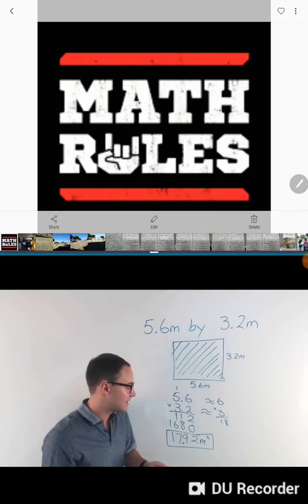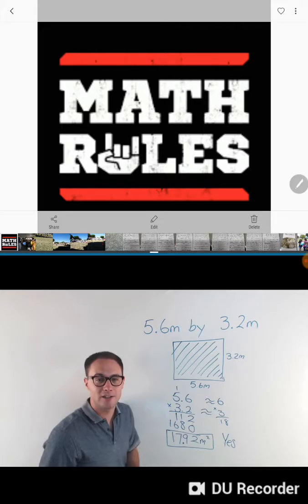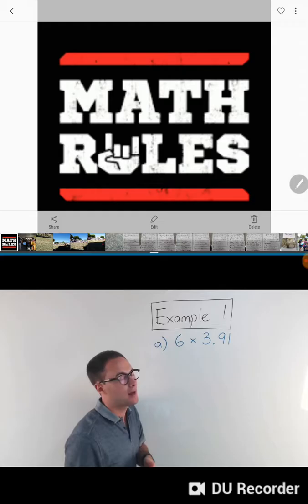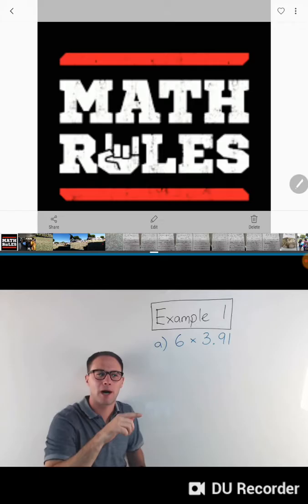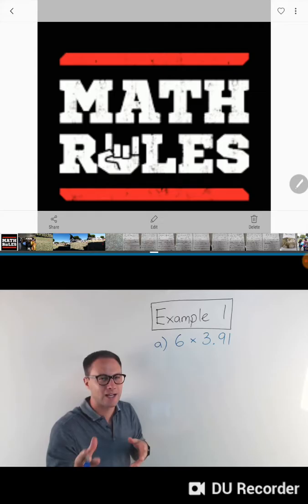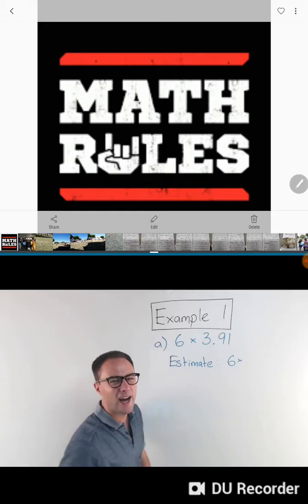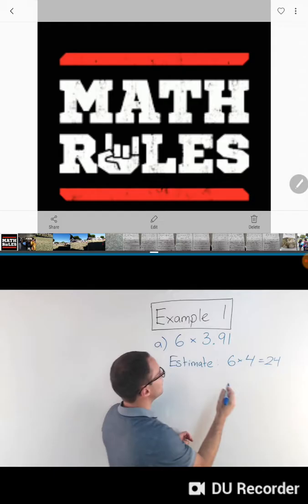Okay, so let's try another example. Here's Example 1: 6 times 3.91. Now when you're dealing with decimals, it's always a good idea to estimate, and the reason is because it can be very easy to put the decimal point in the wrong spot, which completely changes your answer. So if you estimate, that will help catch those errors. If we're going to estimate, this would be, the 6 is okay, 3.91 we can just round up to 4, so we're thinking our product should be around 24.